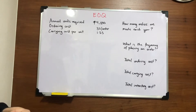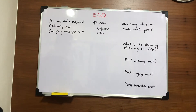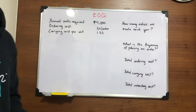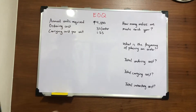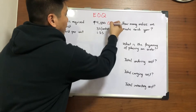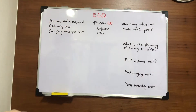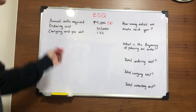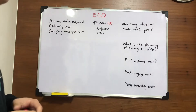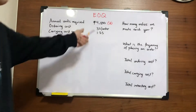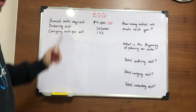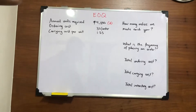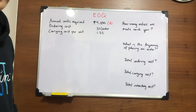Where will you be able to reap maximum benefits? You have to determine first your annual units required — let's just label it as A. And then determine your ordering cost. Ordering cost may seem a small amount, but in reality, ordering cost refers to the costs that are attributable to insurance, taxes, and those costs that refer to the back office.